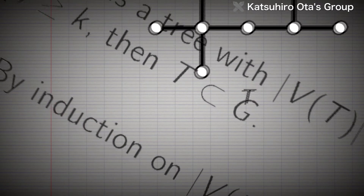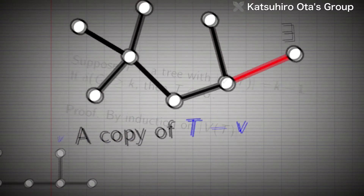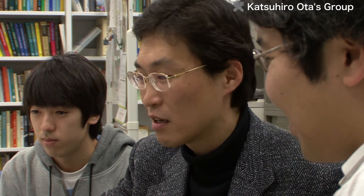Graph theory has a broad range of applications, including topics in engineering and social science, such as the structure of computer data and algorithms. The Autor Group will continue doing further research to investigate graph structures.